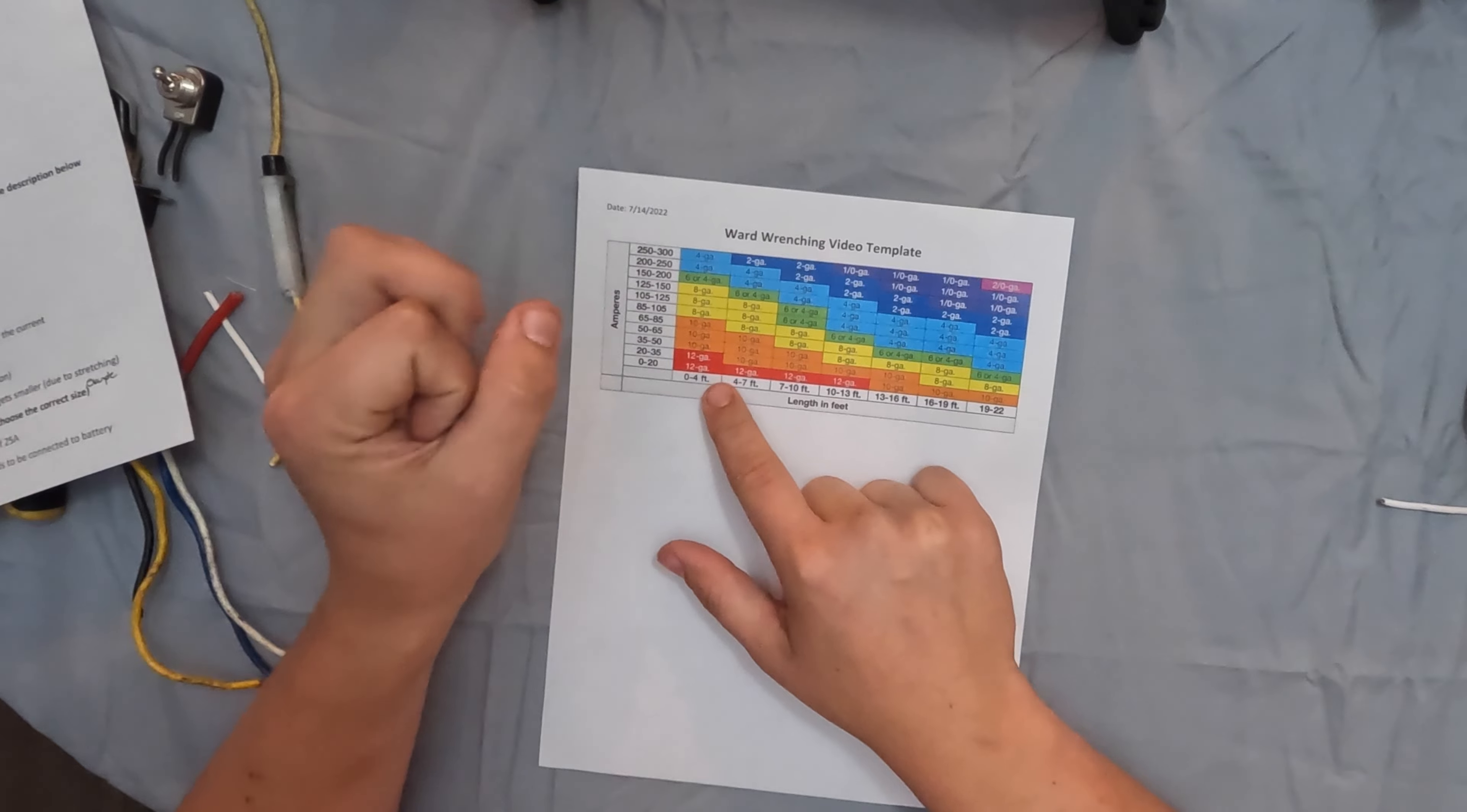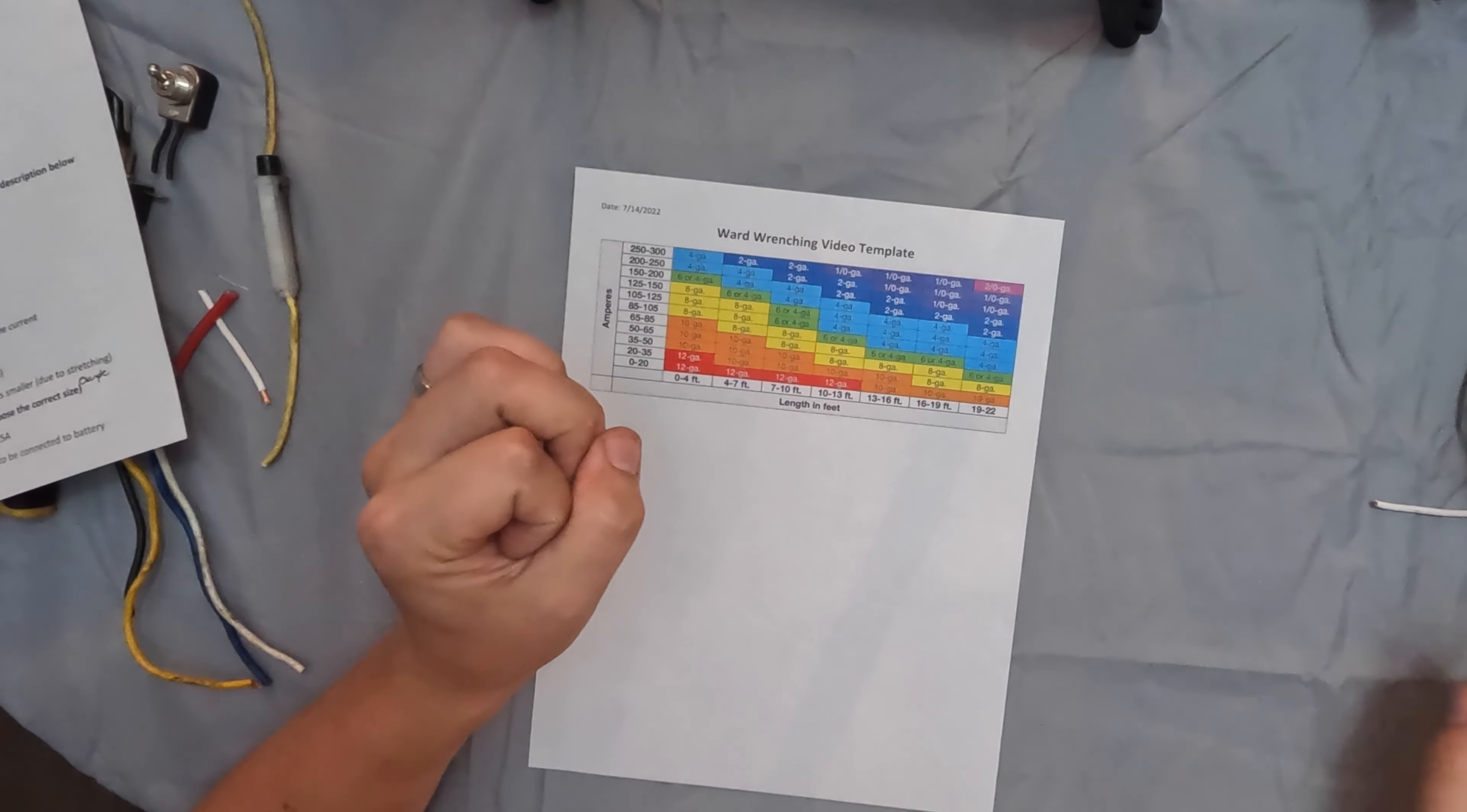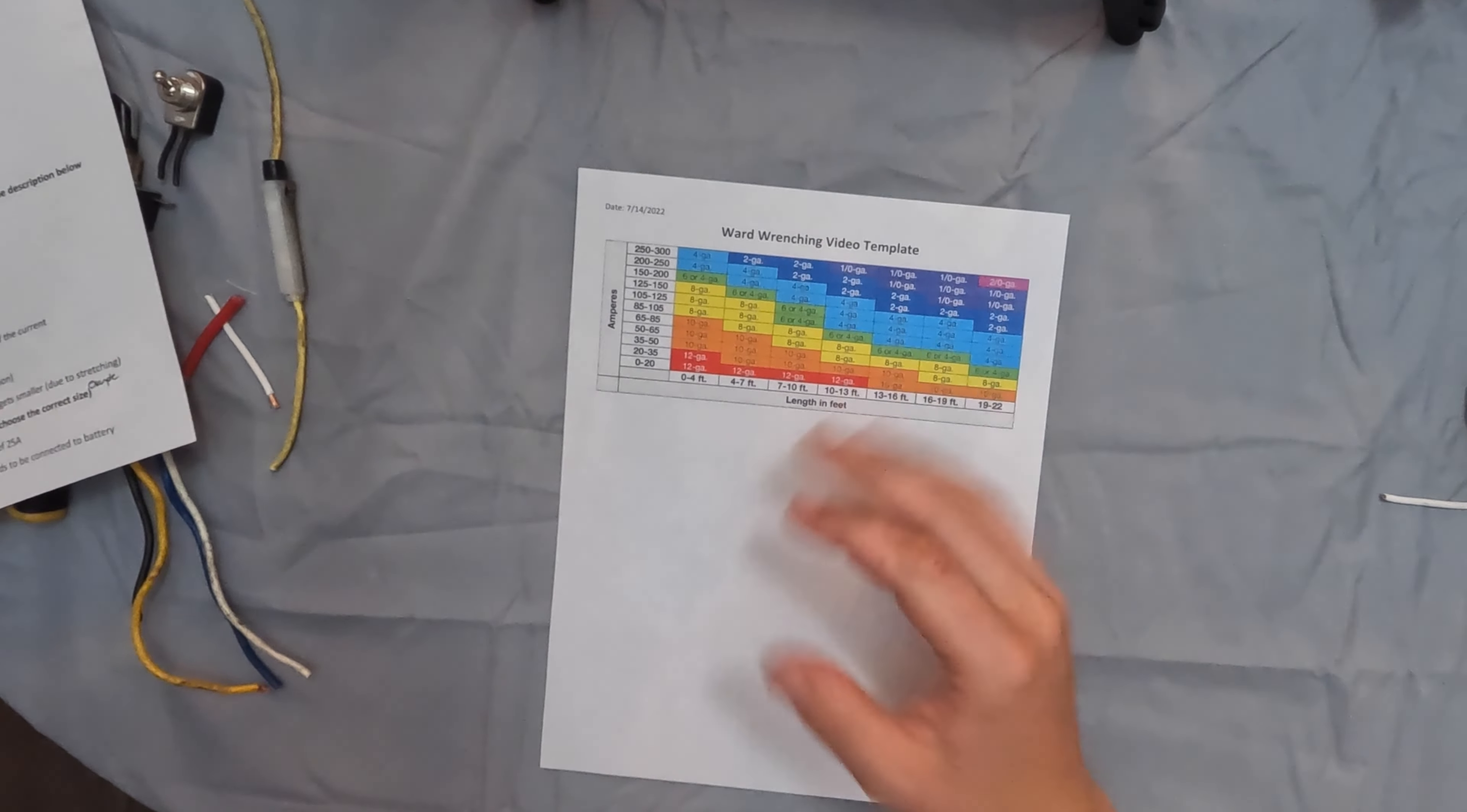So as the wire size gets larger, so as it physically gets larger, the gauge number gets smaller. So like we said, this red wire that we showed was a 10 gauge wire and it's physically larger than the white and yellow wires, which are 14 gauge. And the problem is, it's due to stretching. A 14 gauge wire is stretched more than a 10 gauge wire. So let's go over how do we select the right size.